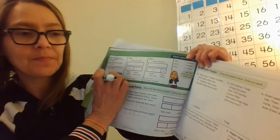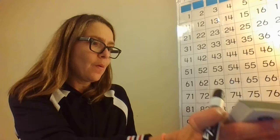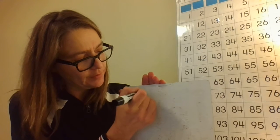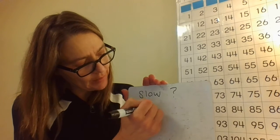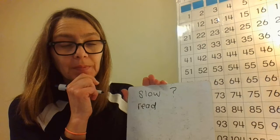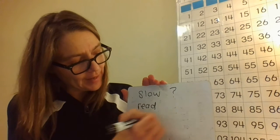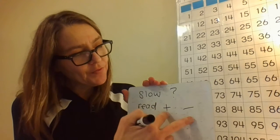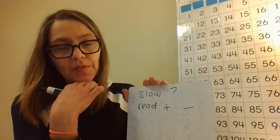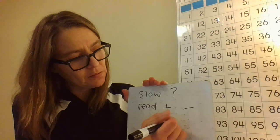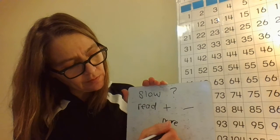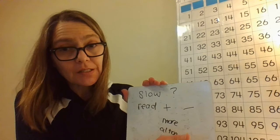When you solve two-step problems, you have to think about what they are asking you. Slow down, read it carefully — or have someone read it to you — and figure out whether they are asking you to add or subtract. Different words are associated with different operations. For addition: adding, greater, more, or altogether are words associated with addition.